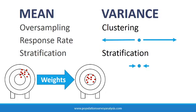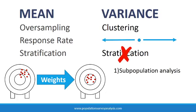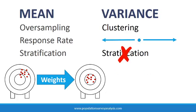Researchers may not adjust for the effect of stratification on variance in two circumstances. One, when conducting subpopulation analyses because there may be too few observations per strata to produce variance estimates. Or two, when performing multi-survey analyses where the units of stratification differed across surveys. When we do not specify strata in our survey design, confidence intervals might be widened very slightly, resulting in slightly more conservative estimates and conclusions, which is fine.